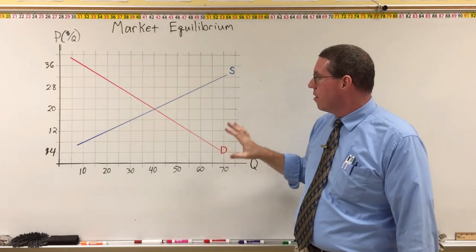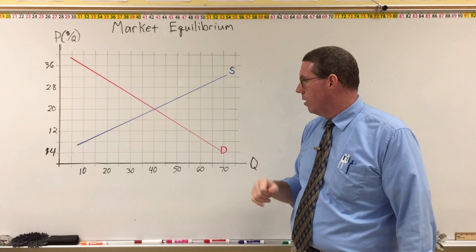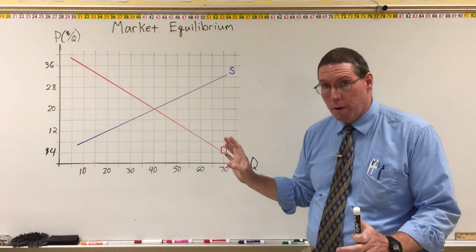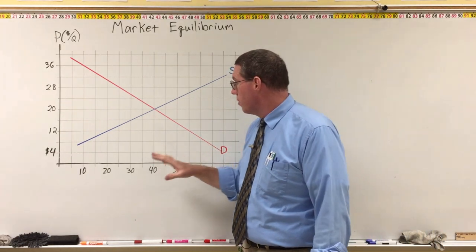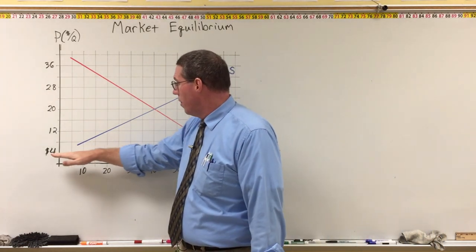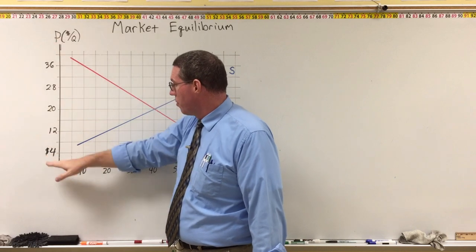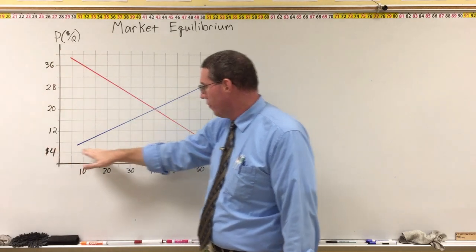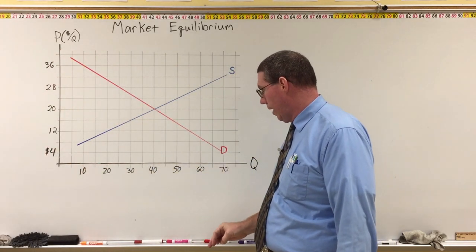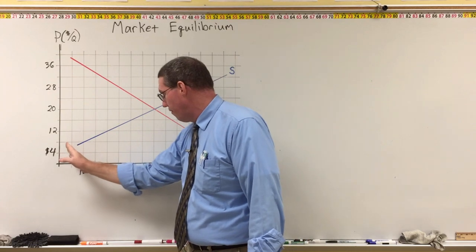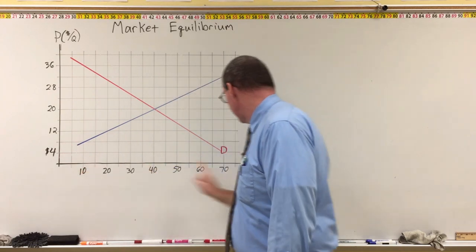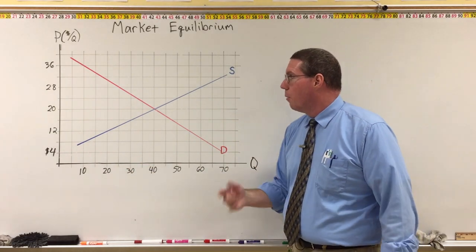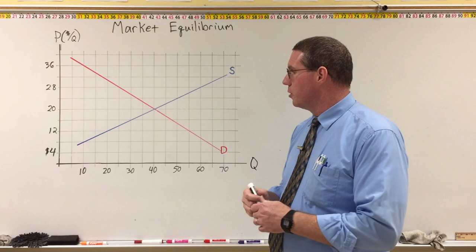We have a market graph we've already seen, used in an example a couple lessons ago. It shows some product — it doesn't matter what the product is. On the price axis we have $4, $8, $12, $16, $20, so every line goes up by $4. On the horizontal axis, each line goes up by 5 units: 5, 10, 15, 20, 25, 30, and so on.